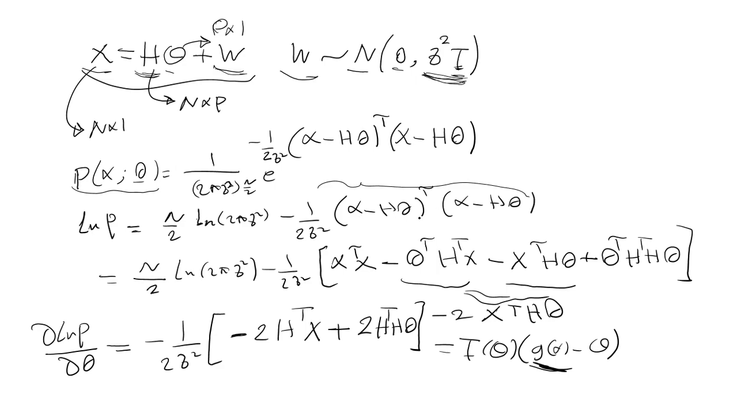By multiplying this one we will have X X transpose minus theta transpose X transpose X minus X transpose X theta plus theta transpose X transpose X theta. In the middle of this expression there are two terms which are scalars and both of them are identical. If we take transpose we can see both of them are the same.